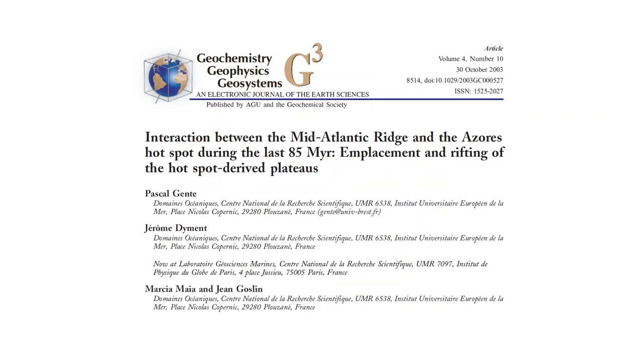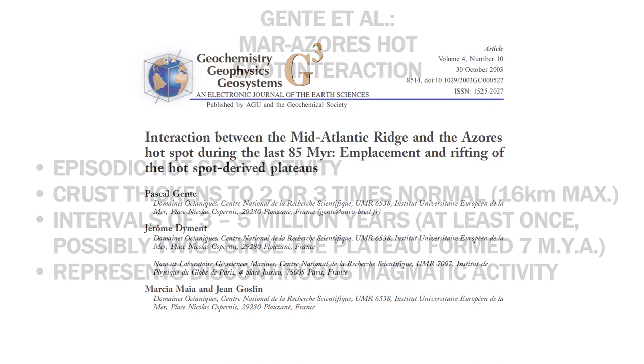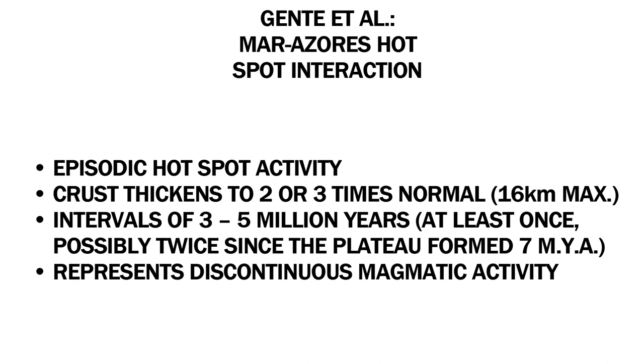With regards to variation in crustal thickness however, we do have access to an interesting paper that could help explain large variations in sea level in the region of the Azores Plateau over the last few million years. One of the hypotheses suggested in this paper is that there is episodic hotspot activity, which causes the crust to thicken to two or three times its normal thickness, up to a maximum value of 16 kilometers. This occurs in intervals of 3 to 5 million years, suggesting this has happened at least once, possibly twice since the plateau was fully formed 7 million years ago. This doesn't mean the whole of the plateau increased in thickness, more likely just the crust above the 200km wide hotspot. Remnants of this localised thickening could be seen as some of the modern day islands or seamounts surrounding the plateau.